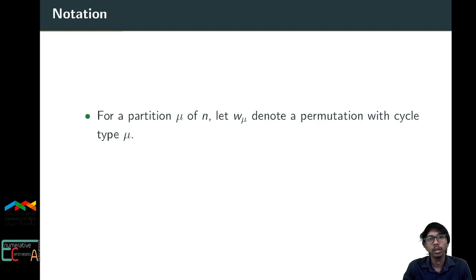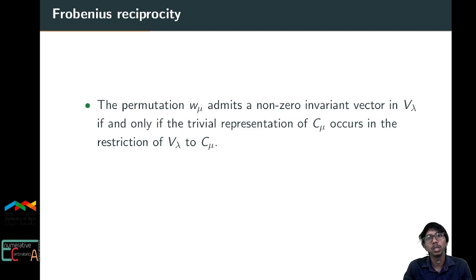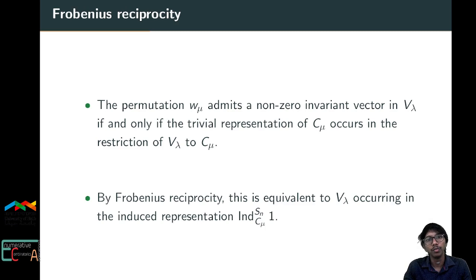For a partition μ of n, let w_μ denote a permutation with cycle type μ, and let C_μ denote the cyclic subgroup generated by w_μ. The permutation w_μ admits a non-zero invariant vector in V^λ if and only if the trivial representation of C_μ occurs in the restriction of V^λ to C_μ.